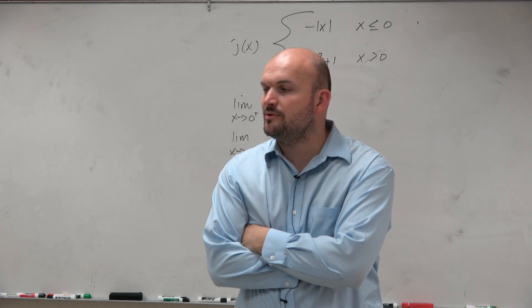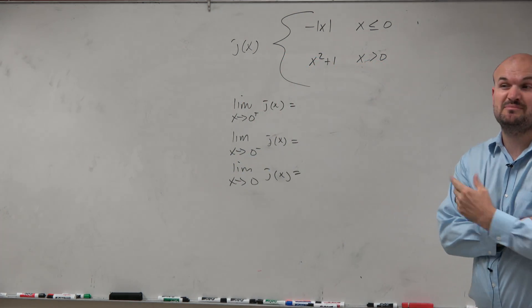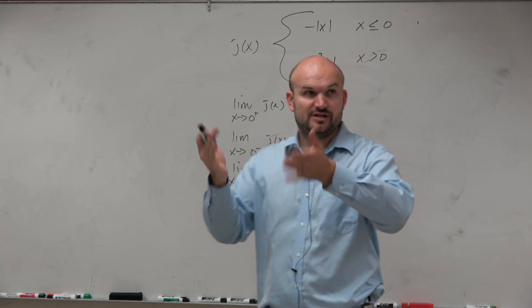When we're looking at doing a problem like this, basically what we want to do is graph both of them separately. So if you guys remember the absolute value function, that is the v-shaped graph, right?